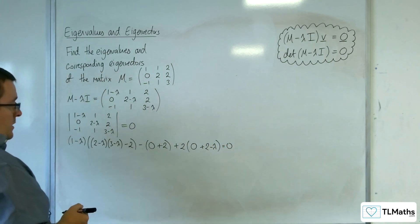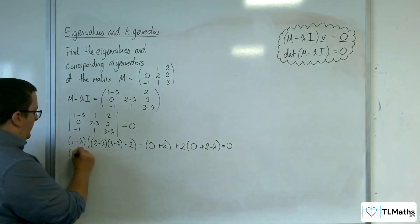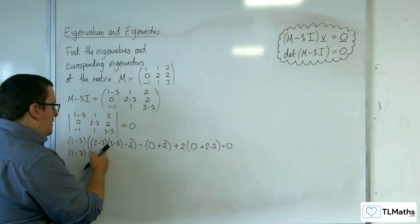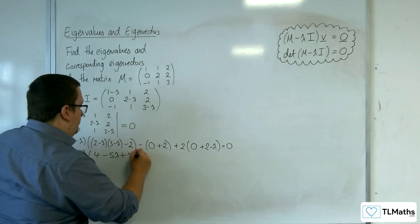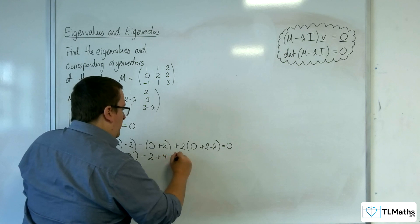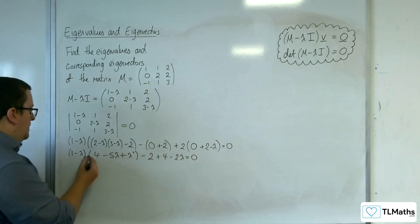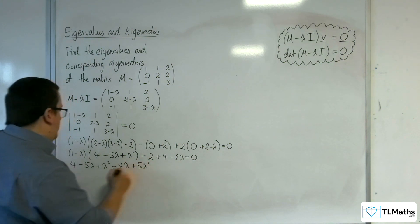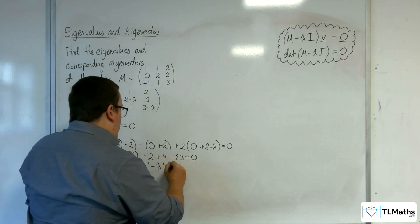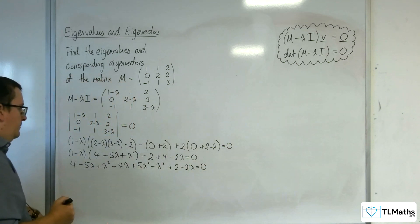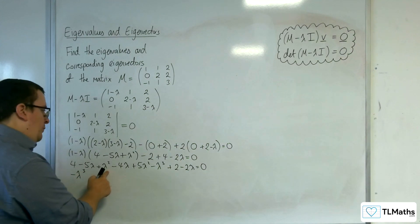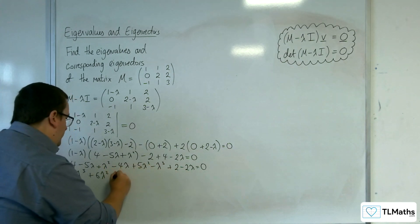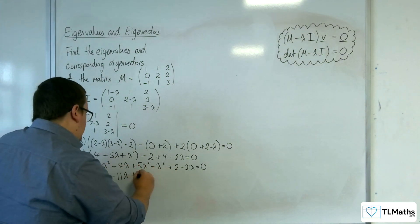Multiplying out: we have (1-λ) times [6 - 2 - 5λ + λ²], which gives (1-λ)(4 - 5λ + λ²), then minus 2, plus (4 - 2λ), equals 0. Expanding: 4 - 5λ + λ² - 4λ + 5λ² - λ³, then minus 2 + 4, so plus 2, minus 2λ, equals 0. Collecting terms: -λ³ + 6λ² - 11λ + 6 = 0.